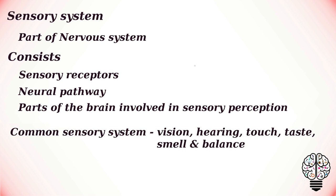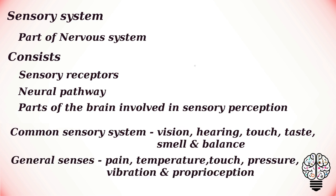The commonly recognized sensory systems are those for vision, hearing, touch, taste, smell, and balance. But senses are not limited to these, as humans possess more or less about 10 different types of senses. The general senses are pain, temperature, touch, pressure, vibration, and proprioception. Receptors for these sensations are distributed throughout the body.